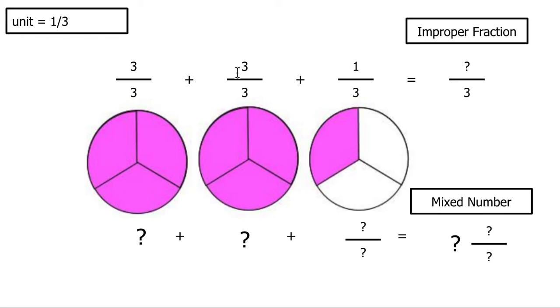So I know that 3 plus 3 is 6, plus 1 more should give me 7. So let's count. 1, 2, 3, 4, 5, 6, 7. So my improper fraction is 7 thirds.